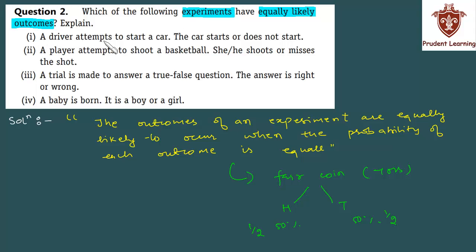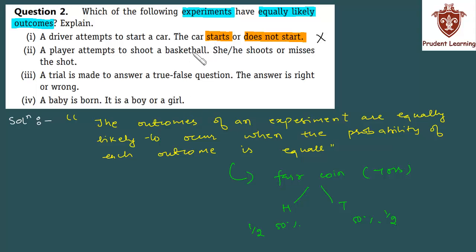First section: a driver attempts to start a car — the car starts or does not start. यहाँ event है car को start करना, और outcomes हैं या तो car start होगा, या फिर नहीं होगा. Car का start होना कई factors पर depend करेगा — battery down है या नहीं, engine ठीक है या नहीं, ignition ठीक है या नहीं. तो आप ऐसा नहीं बोल सकते कि 50% chances हैं कि car start हो. Since दोनों outcomes की probability equal नहीं है, इसलिए यह equally likely outcomes नहीं हैं. तो first section में equally likely outcomes नहीं है.